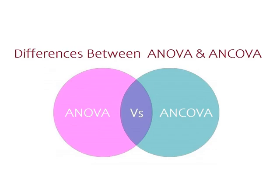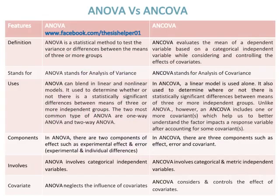Differences between ANOVA and ANCOVA. ANOVA is a statistical method to test the variance or differences between the means of three or more groups, while ANCOVA evaluates the mean of a dependent variable based on a categorical independent variable while considering and controlling the effects of covariates.